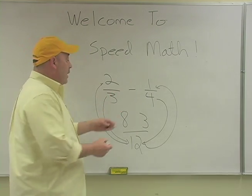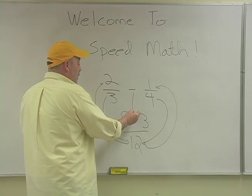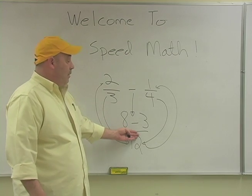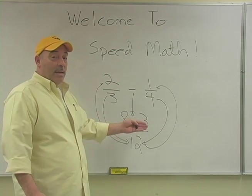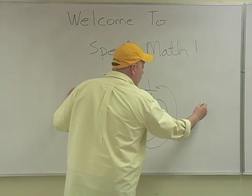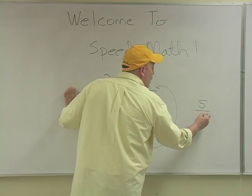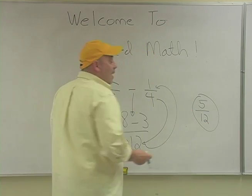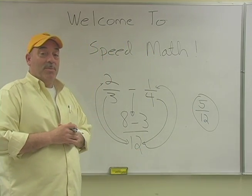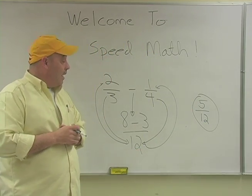All we have to do is bring down the subtraction sign, and we simply do the arithmetic. Eight minus three is five, and we keep the denominator of twelve. And that, my friends, is how simple subtracting fractions with different denominators is.